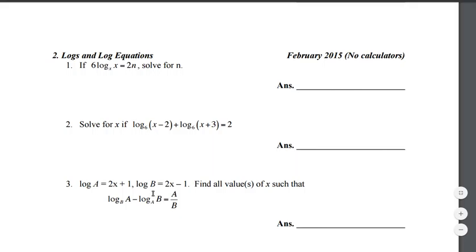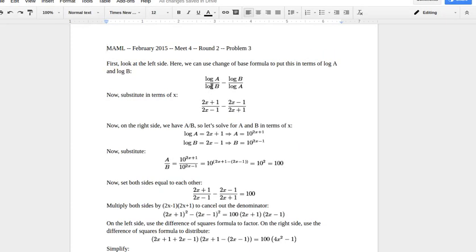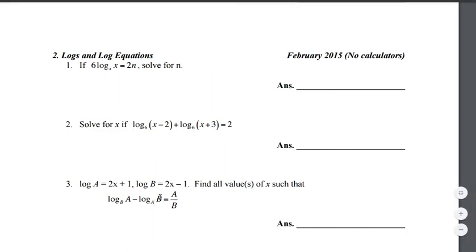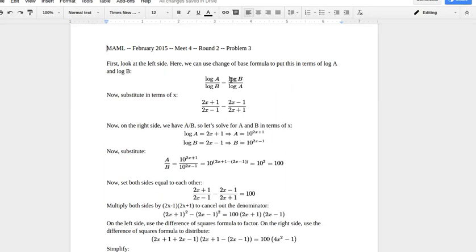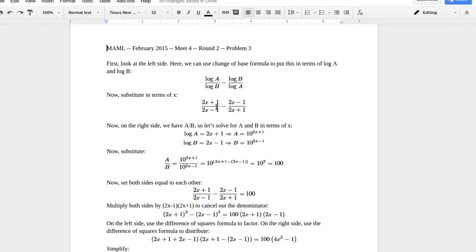This problem has a lot in it, so let's take it one step at a time. Since we need to solve for x, I'm going to get everything in terms of x. Looking at the left side: using the change of base formula, log base b of a is log of a over log of b, and log base a of b is log of b over log of a. We then substitute — log of a is 2x plus 1 and log of b is 2x minus 1 — and now everything is in terms of x.